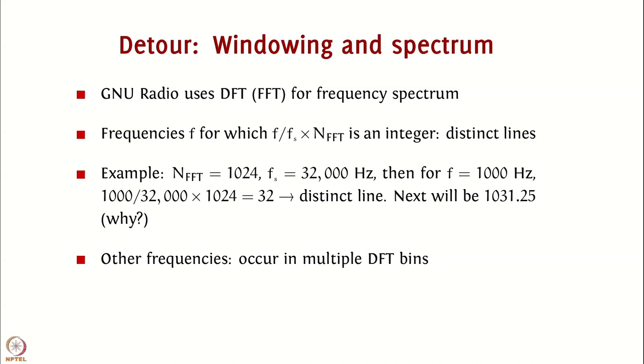Let us take an example. If we choose NFFT to be 1024, a sampling frequency of 32,000 hertz, then choosing F to be 1000 hertz gives us 1000 upon 32,000 times 1024 is 32, which is an integer. Therefore, we get a distinct line. The next number of interest will be 1031.25. You should try to figure out why that is the case. But, it is very evident that 1000, 2000 and such numbers will have this property.